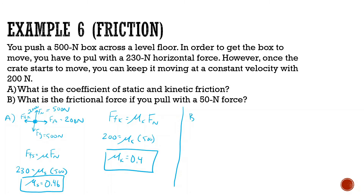Part B asks: what is the friction force if you pull with 50 newtons of force? Force of gravity is 500, force normal is 500. If we try to push this box with a force applied of 50 newtons, static friction will counteract that. The force of static friction is going to equal 50 newtons, preventing it from moving. It can't still be 230 or else the free body diagram would show it moving to the left — friction doesn't move anything, it just prevents motion or slows it down. So the force of friction matches the applied force: the answer is 50 newtons.